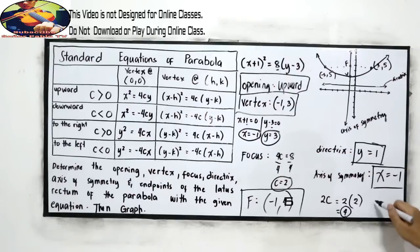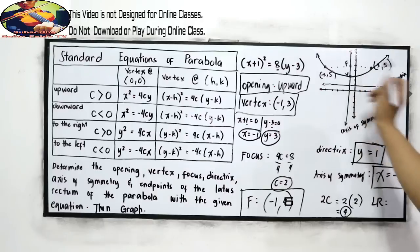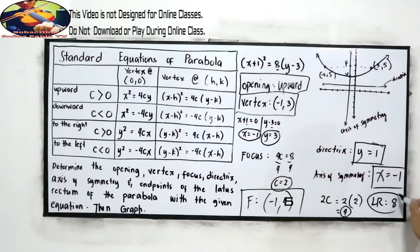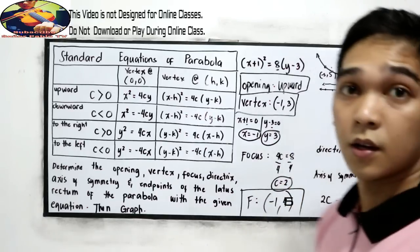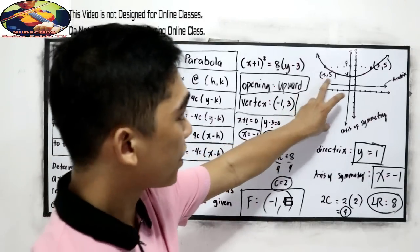So the length of latus rectum. The length of latus rectum is 1, 2, 3, 4, 5, 6, 7, 8. Or simply 4c, 4 times 2. That is 8 units. We're done. And this is now our graph.